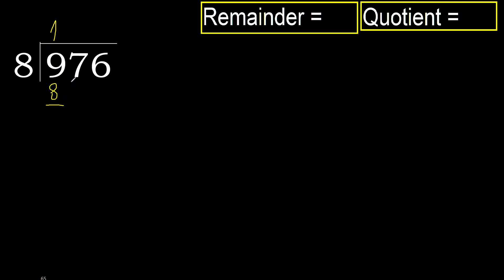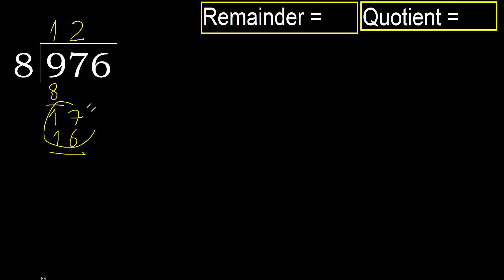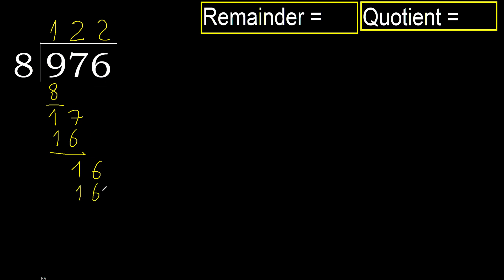Ok, subtract: 9 minus 8 is 1. Next, 17. 8 multiply by 3 is 24, is greater. Multiply by 2 is 16, is not greater. Ok, subtract. Next 16. 8 multiply by 2 is 16, is not greater. Ok, subtract.